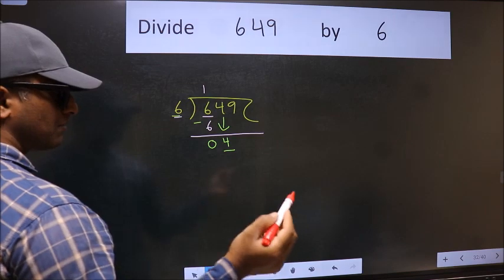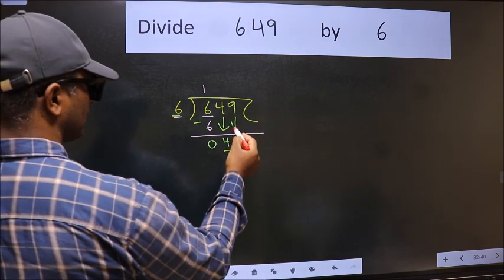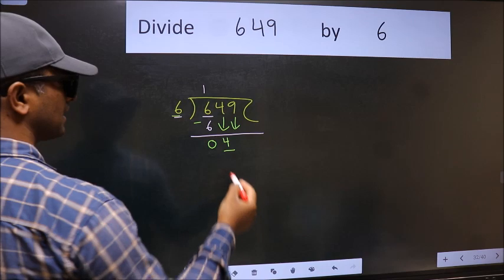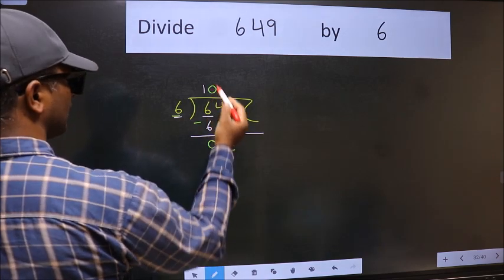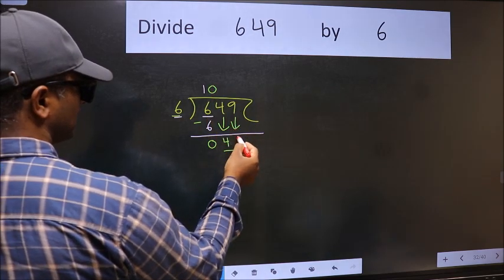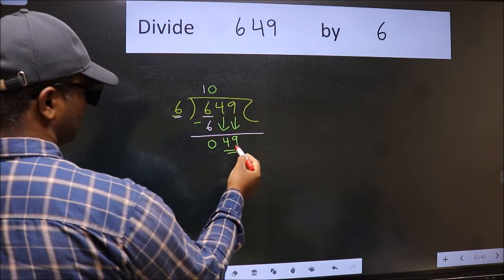So we should bring down the second number. And the rule to bring down the second number is, we should put 0 here. Then only we can bring this number down. Now 49.